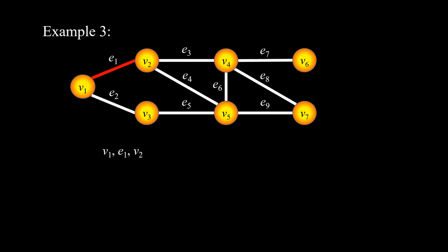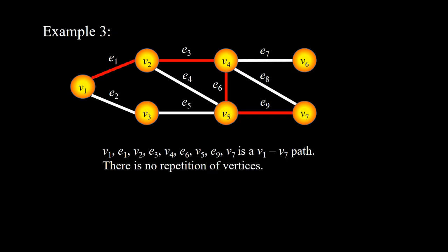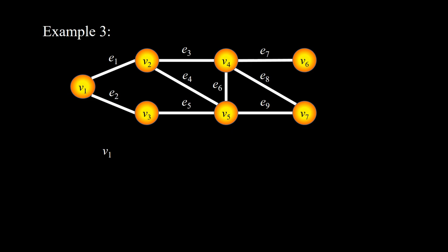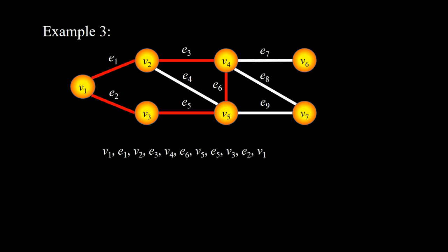Starting from V1, E1, V2, E3, V4, E6, V5, and E9, V7. This is an example of a V1-V7 path — there is no repetition of vertices. Then starting from V1, E1, V2, E3, V4, E6, V5, E5, V3, and E2, V1. This is an example of a cycle from V1 to V1. Here there is no repetition of vertices, except for the starting vertex which is the same as the ending vertex.